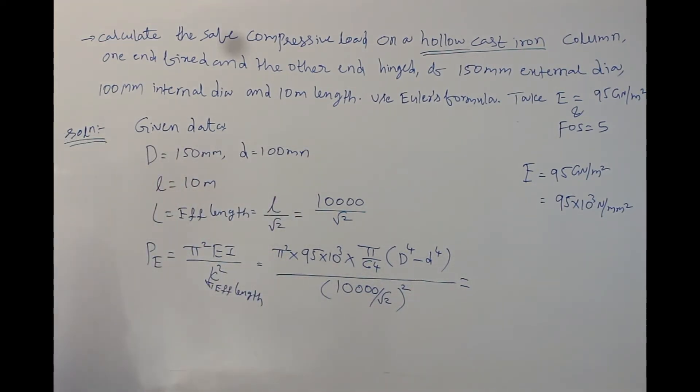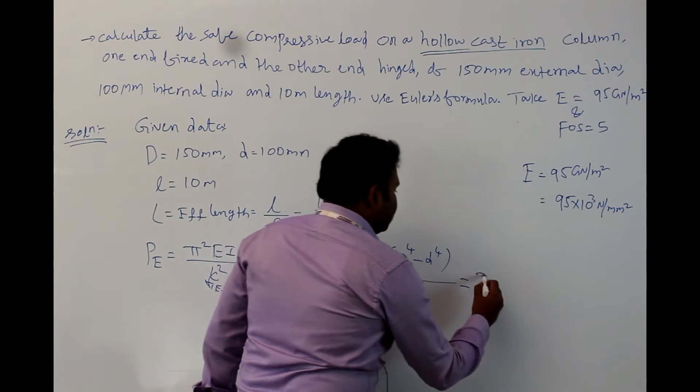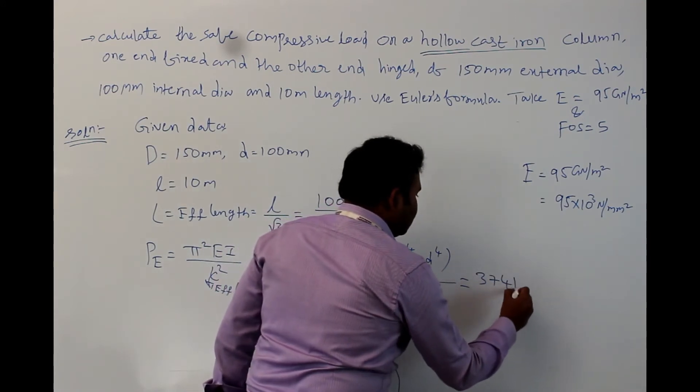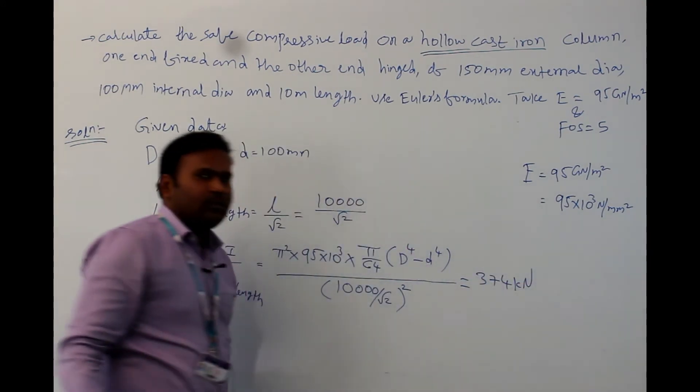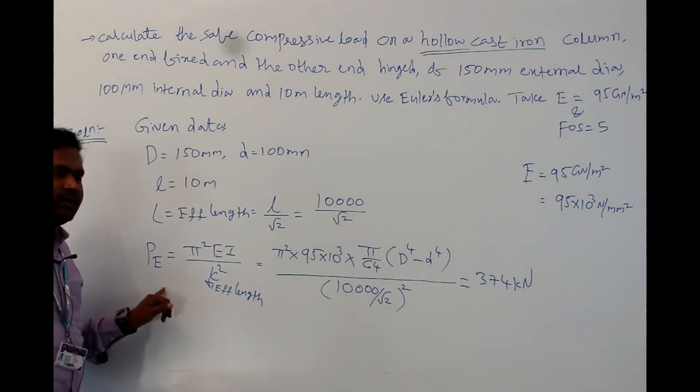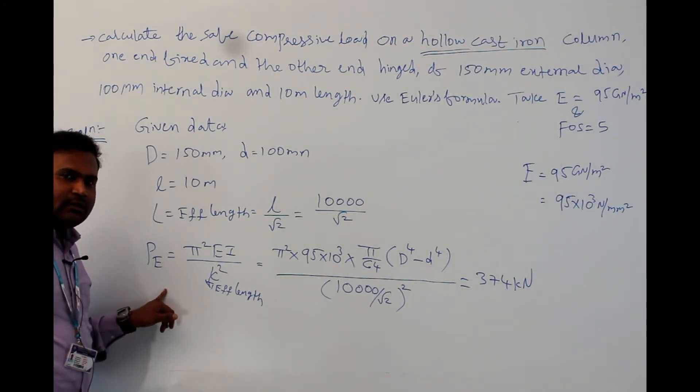The value comes to be 374 kilonewton. It is actually Euler's load carrying capacity of the column.